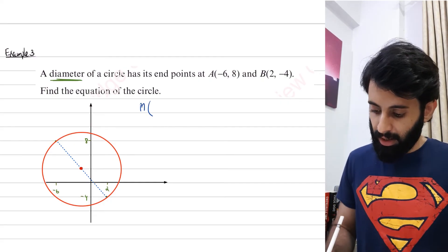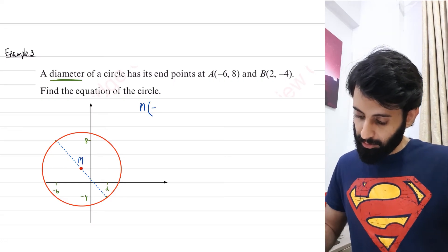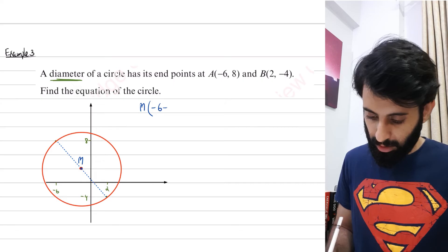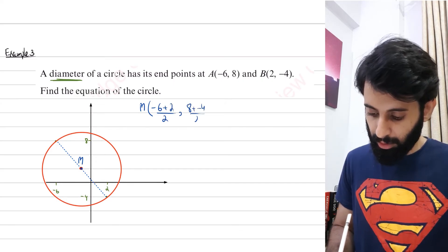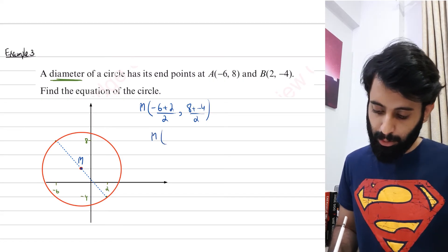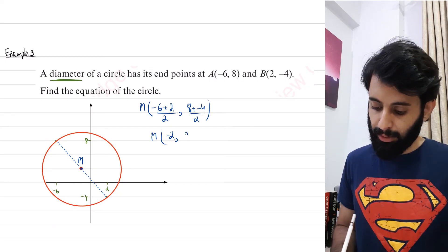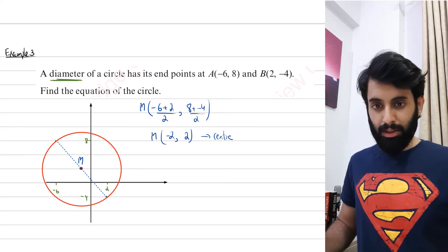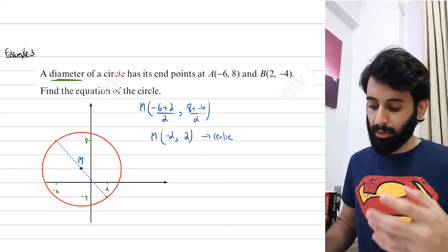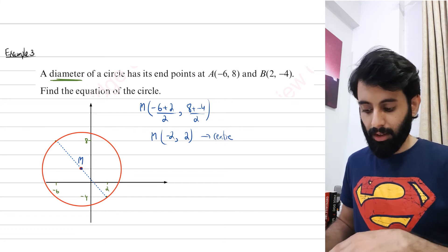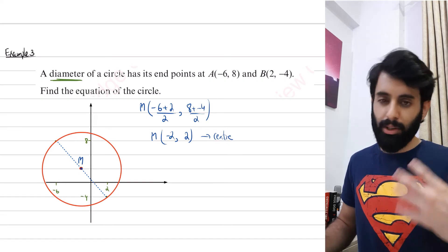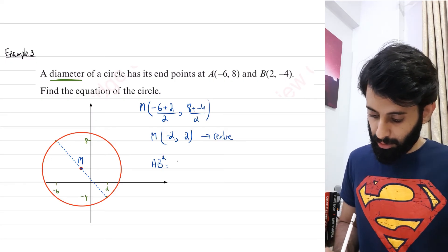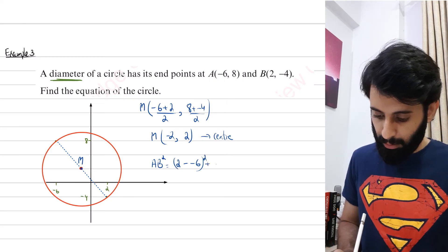Let's see what we need. We need the center, which means we have to find the midpoint — there's no getting away from that. Why the midpoint? Because the center is exactly halfway between the two endpoints of the diameter. Midpoint = ((−6 + 2)/2, (8 + (−4))/2) = (−4/2, 4/2) = (−2, 2). So the center is (−2, 2). Now we need the radius — there are two ways: work out the full diameter and divide by 2, or find the distance from center to one endpoint.